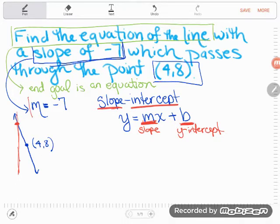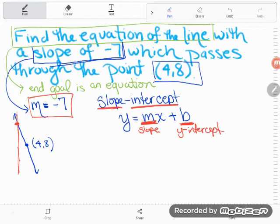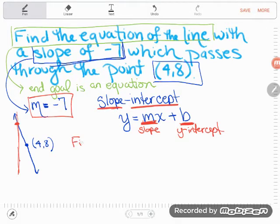We already know M. They told us. So they did part of the work for us. Our M is negative 7. But the problem is we don't know B. Nowhere in this problem does it tell us what the Y-intercept is. So that's really the meat of the problem. We are going to have to find B before we can do anything else.